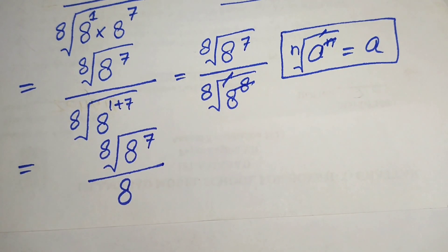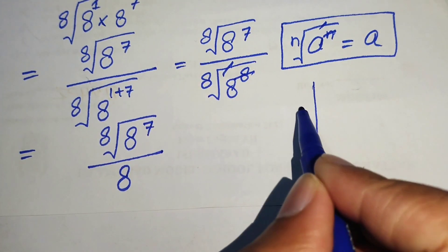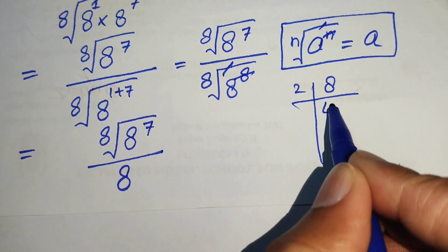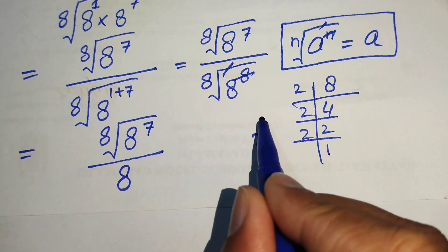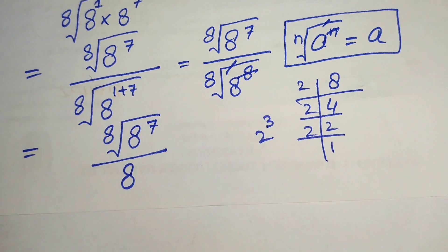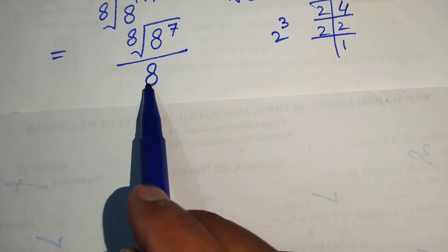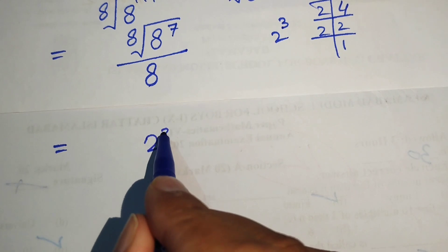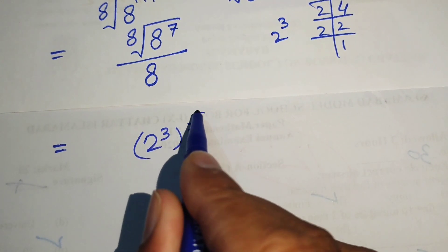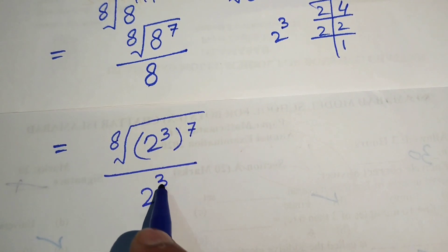Now we write the base 8 in its prime factor form. The prime factors of 8 are: 2 fours are 8, 2 twos are 4, and 2 ones are 2, so 8 equals 2 to the power of 3. We replace 8 with 2 to the power of 3, giving us the 8th root of 2 to the power of 3, with exponent 7, divided by 2 to the power of 3.